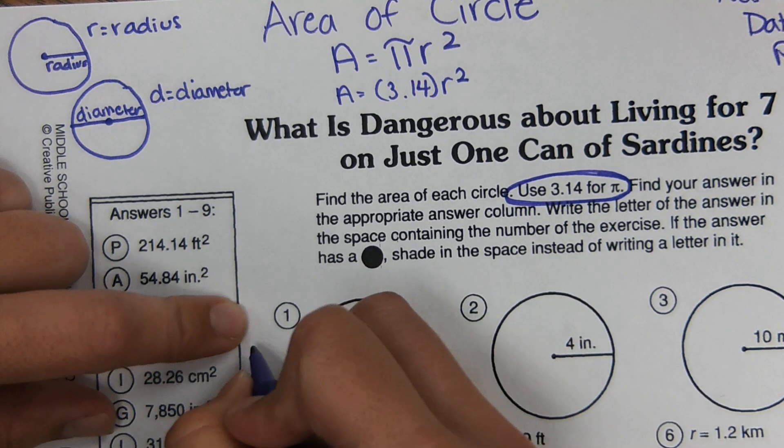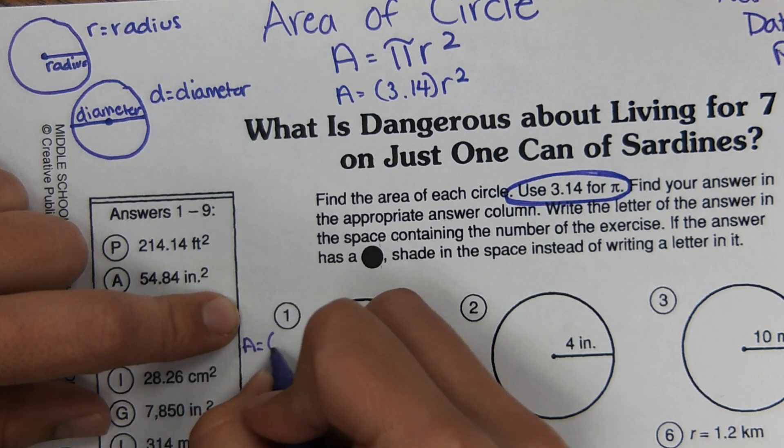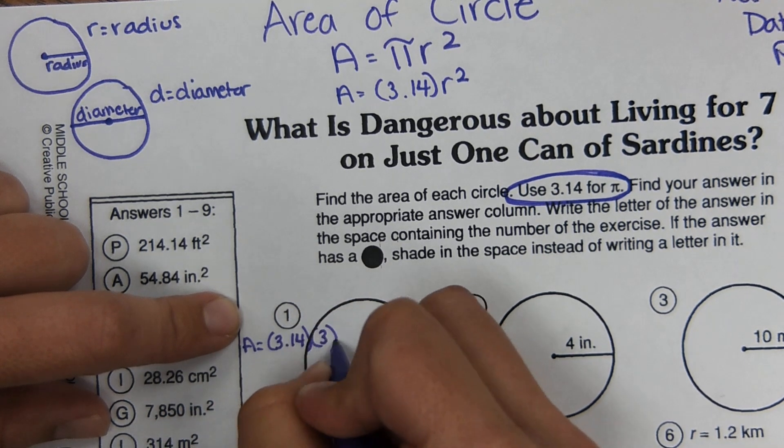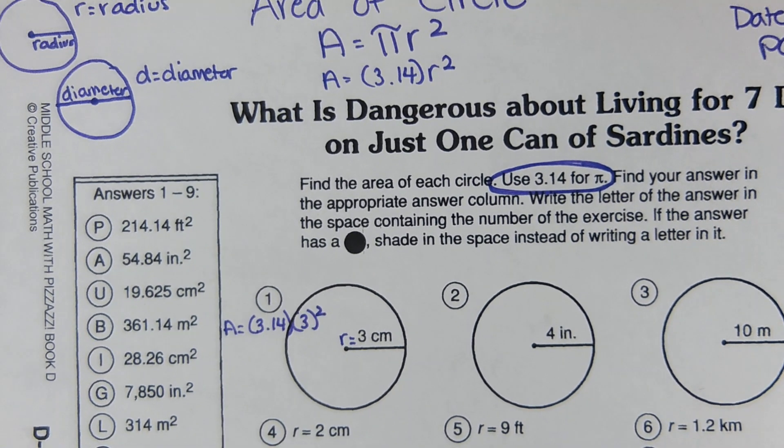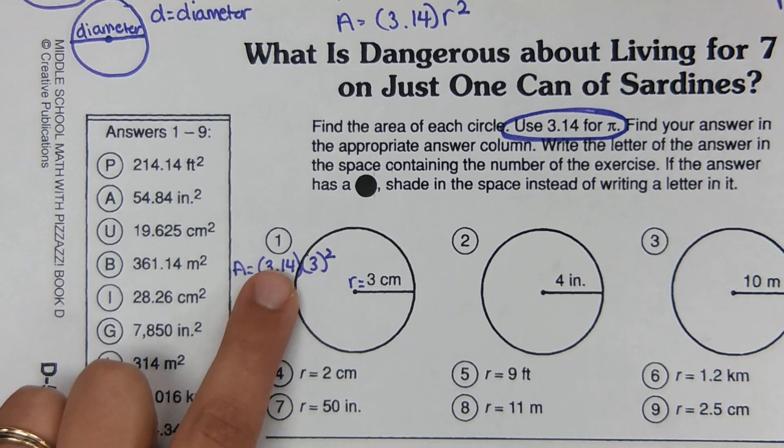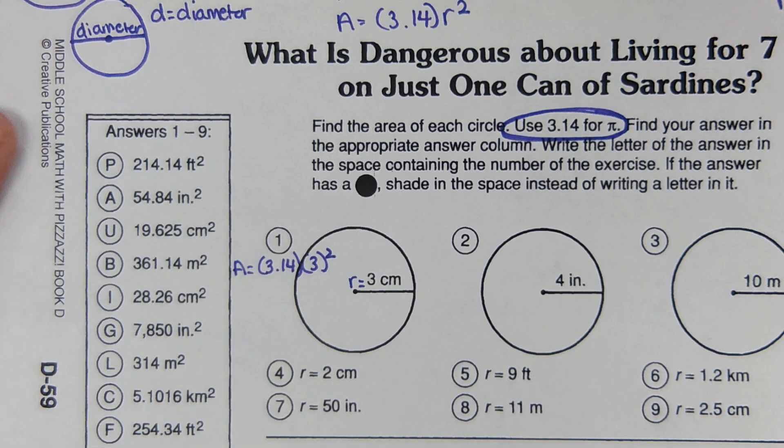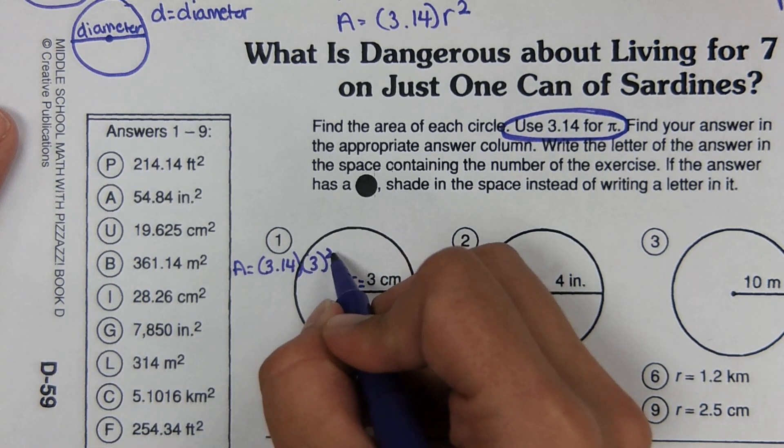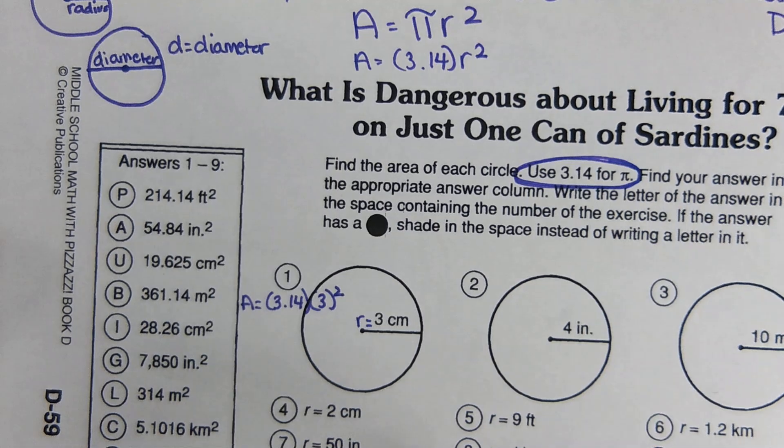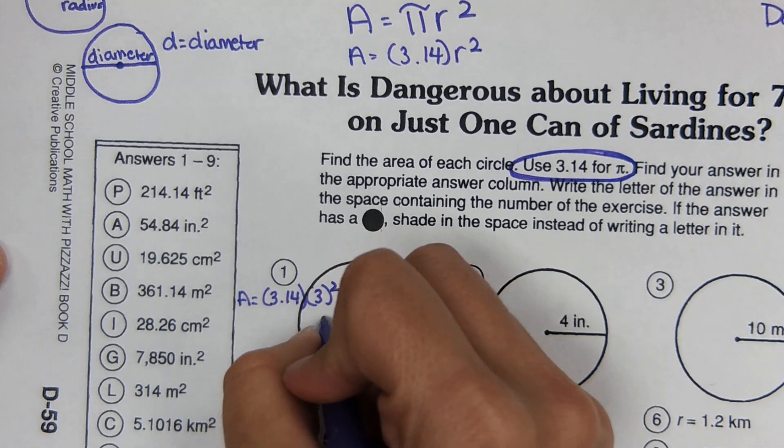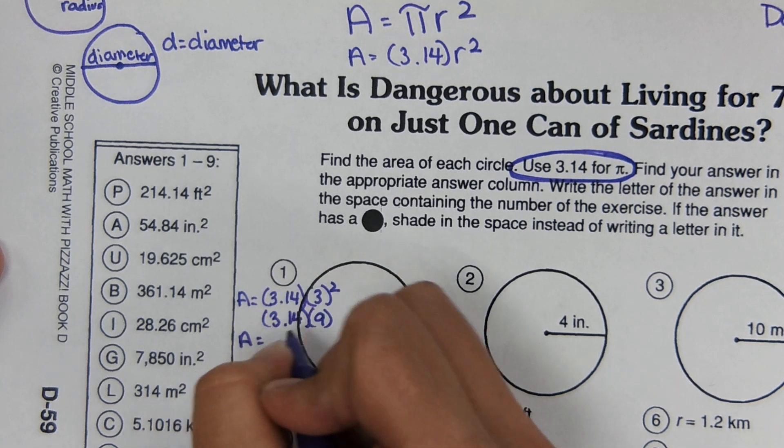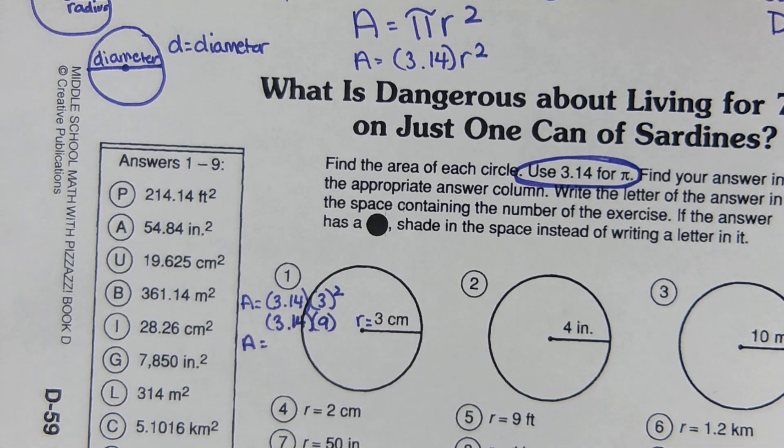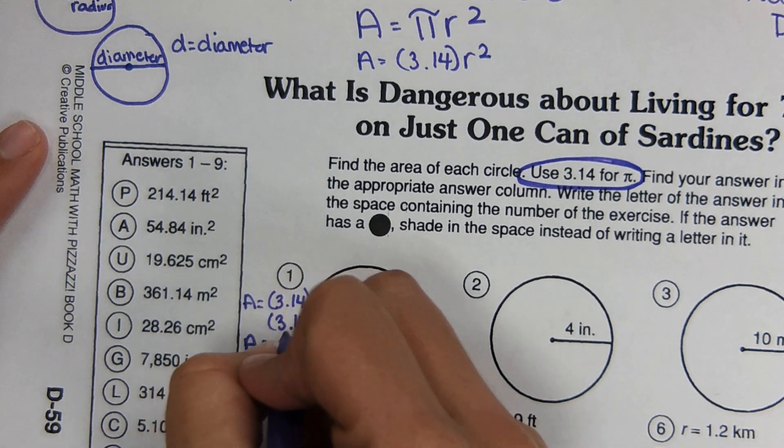And so the way I want you to set this up is area equals 3.14 three squared. And then solving this, we have to make sure to use order of operations. So we're going to do this exponent first. Three times three would be nine. And then multiply these two numbers.